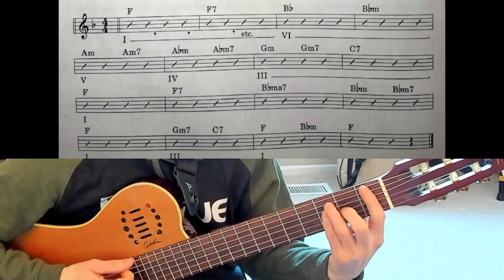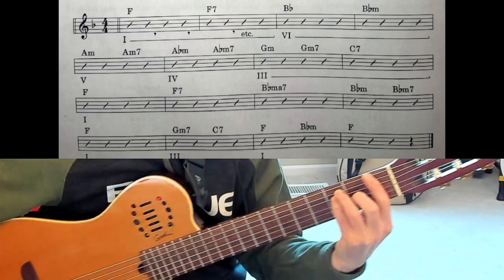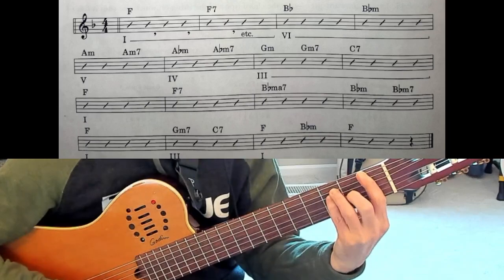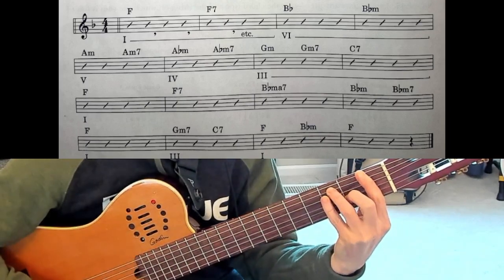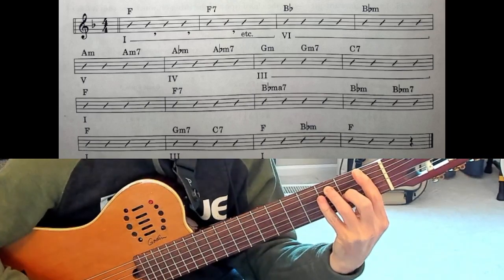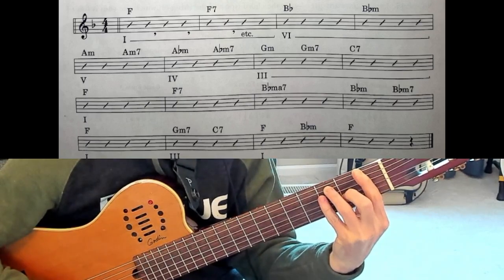So here's F major at the first fret, our major bar chord root 6. Then we go to F7. Okay so that's all at the first fret.